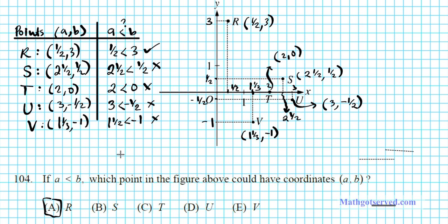There are other ways to do this which are more abstract, involving approximating distances visually, but those methods are a little too complicated. That's why it's good to make reasonable assignments to your abstract points so you can compare them with ease.